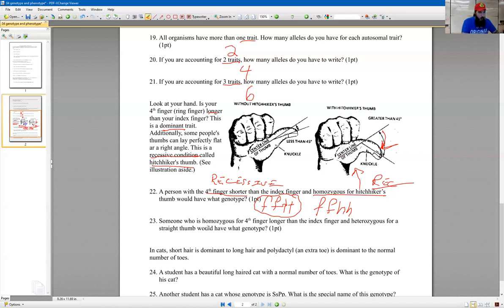All right, so here we are. We're homozygous for fourth finger longer. So we look back up here, fourth finger longer, that's the dominant version of the trait. So we're dominant here. And heterozygous for a straight thumb. Again, straight thumb, that's the dominant version of this trait. So we got a homozygous fourth finger longer, that's dominant. Homozygous dominant.